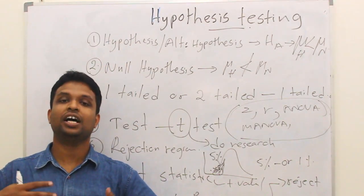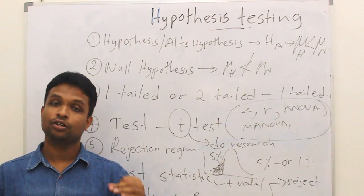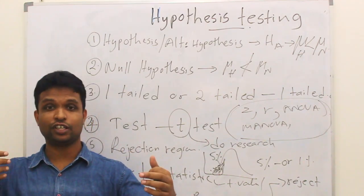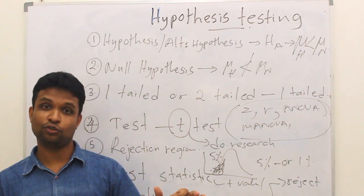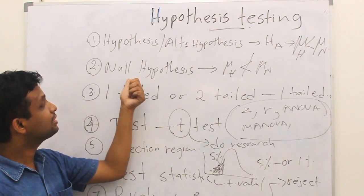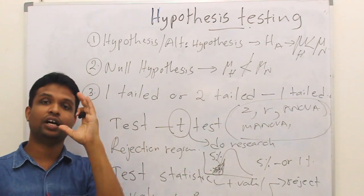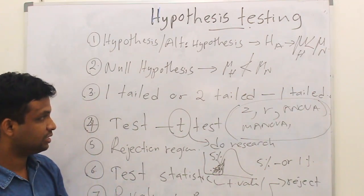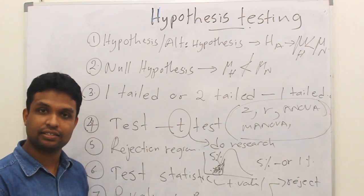To summarize: you need to have a hypothesis — if you don't have a hypothesis, you will not do any research. To see whether there is a significant difference or a significant association, you need to know what is normal, and you understand what is normal by stating the null hypothesis. Then you need to decide whether your hypothesis is a one-tail or two-tail hypothesis, and based on your hypothesis, you decide what is the best test.